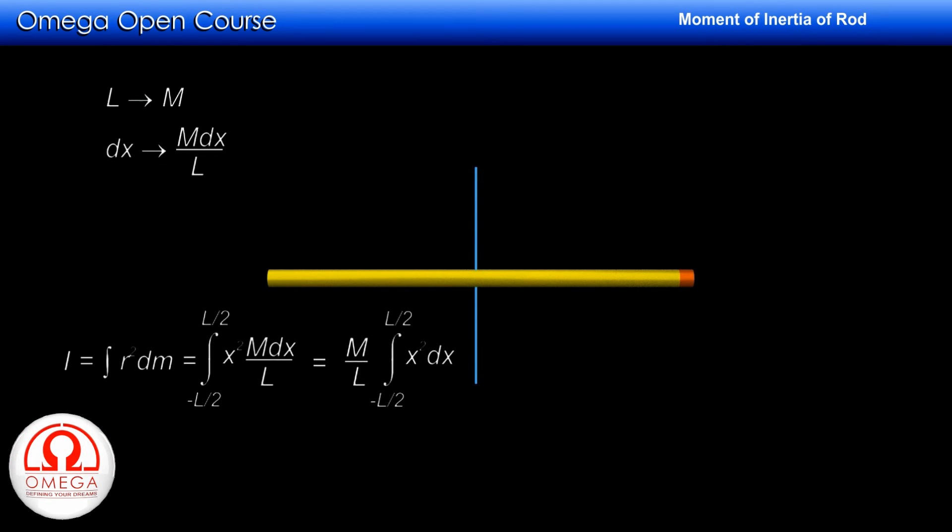m by l is constant, so let us take it out of the integration. Our expression becomes m by l into integration of x square dx from minus l by 2 to l by 2.